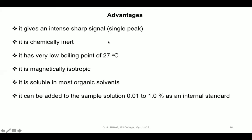TMS gives a very sharp and intense signal. It is chemically inert — it will not react with your compound or the solvent used. Since it has a very low boiling point of 27°C, it can be easily evaporated at room temperature. It behaves isotropically in the magnetic field, is soluble in most organic solvents used for NMR, and can be added in a very diluted solution of 0.01 to 1% as an internal standard.